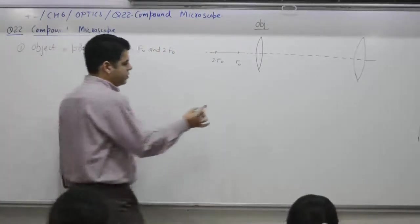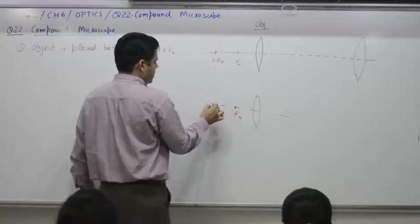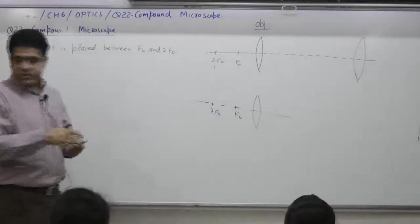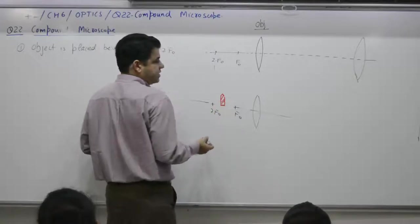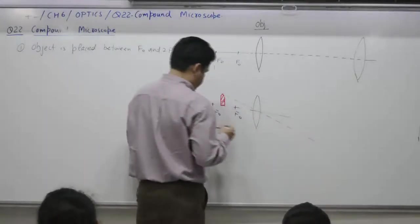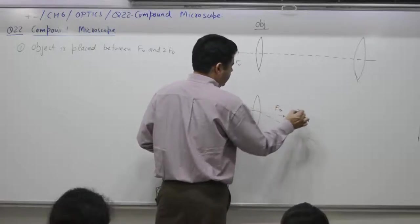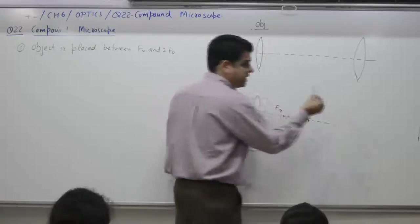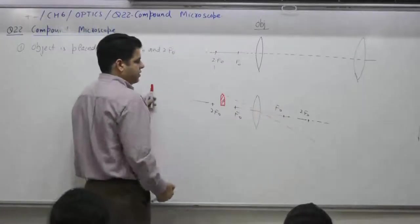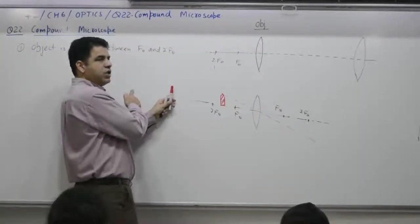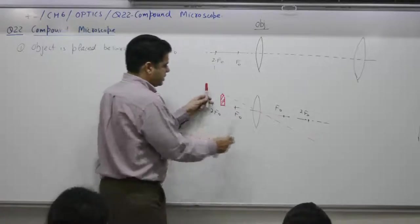Why? Recall. You need not write this part. If you place an object between F0 and 2F0, then what was the case? Yes. Lenses. What you get is? Image is formed. Where? Between? 2F0 and infinity. Revise. If the object is at infinity, image formation was at F0. If you keep on moving this one, if it is between infinity and 2F0, its image is between F0 and 2F0. If the object is at 2F0, its image is also at 2F0.